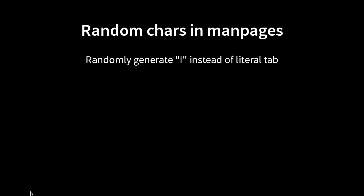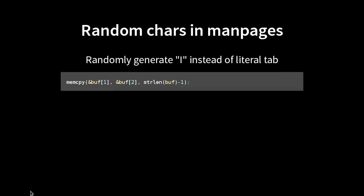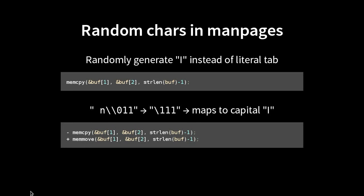Another interesting one: docbook-to-man. For some reason, we'd sometimes randomly see capital I letters instead of tabs. It turned out they were using memcpy — and the top of the memcpy man page says memory regions shouldn't overlap. These regions were going to overlap. If they contained a newline and then a null character, it would eventually map to the wrong character. The fix was just to use memmove instead. But looking at the Diffoscope output between these packages, you're just scratching your head saying: why a capital I? What is going on?